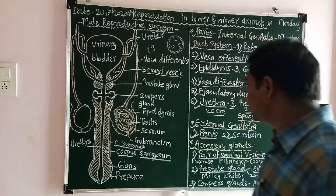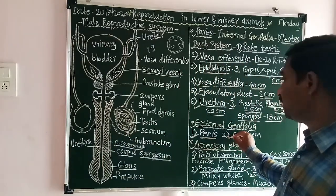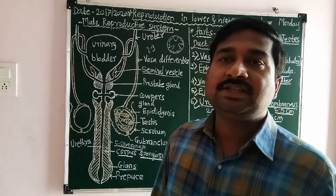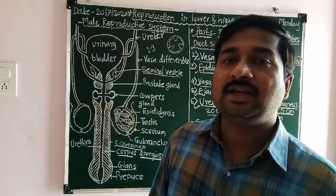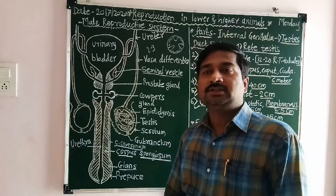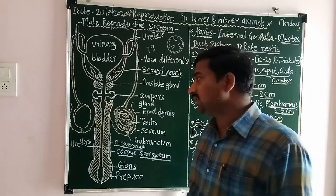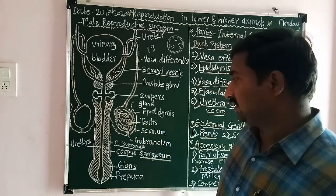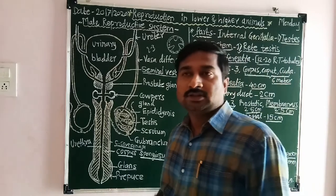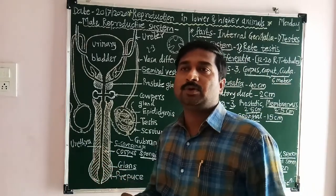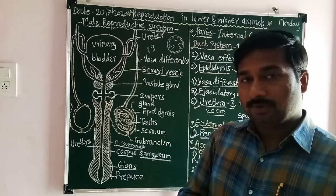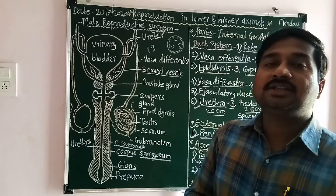The scrotum is the hanging pouch-like or sac-like structure present behind the penis and in the thigh region and lower abdominal area. It is made up of wrinkled, pigmented skin and has two compartments. It contains the dartos muscles.